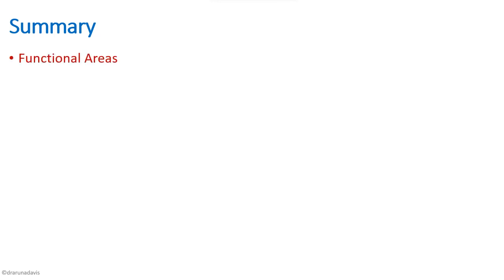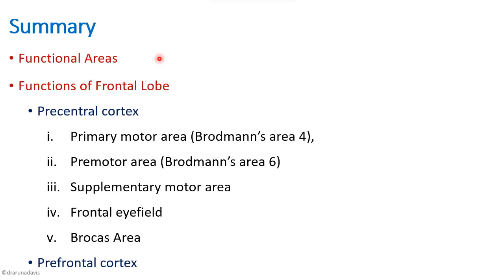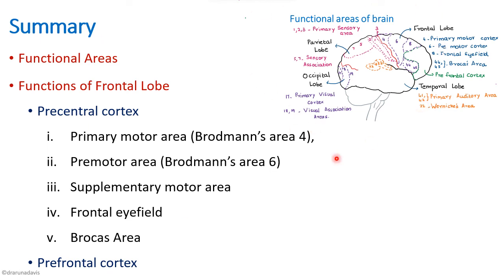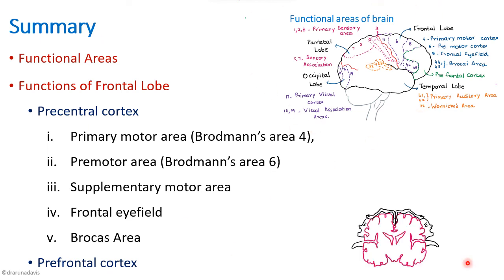To summarize: we first saw the different functional areas of the cerebral cortex, then the functions of the frontal lobe — covering the precentral cortex with its different areas, and then the prefrontal cortex. Answers can be supplemented with diagrams marking the different Brodmann areas and a drawing of the motor homunculus.